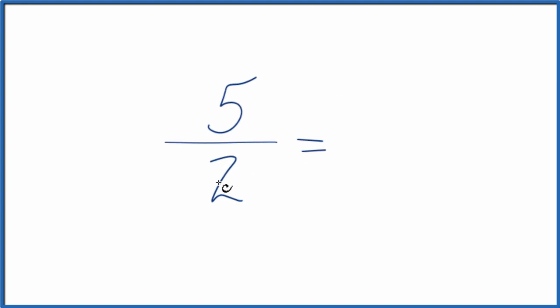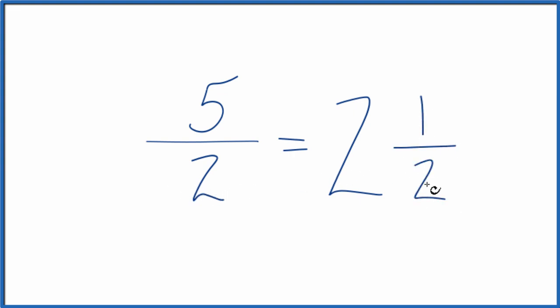5 divided by 2. So 2 goes into 5 two times with 1 left over. We bring the denominator across, we get 2 and 1 half.